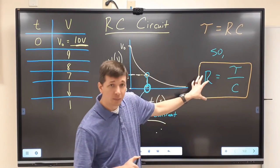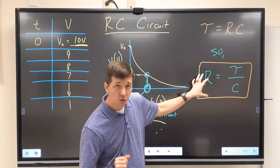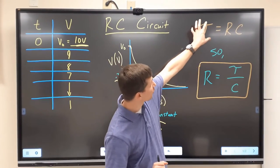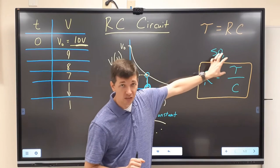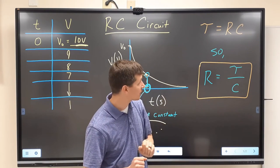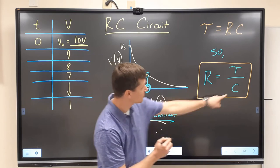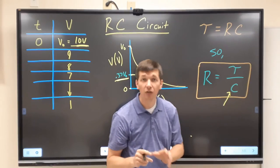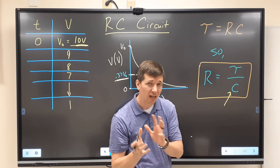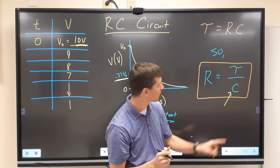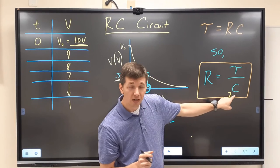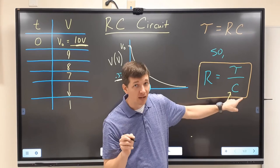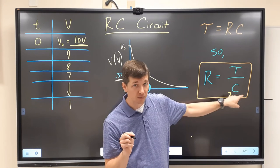Now once we have that time constant, the real question here in this lab is to find the resistance of the multimeter. So if we rearrange our formula, resistance is the time constant divided by the capacitance. Time constant just came from the graph. The capacitance right here is what we're going to measure. It's a 10 microfarad capacitor again. It's not going to be quite 10. But just know when you plug in the capacitance here, you need it to be measured in farads, not microfarads. Convert this to farads.